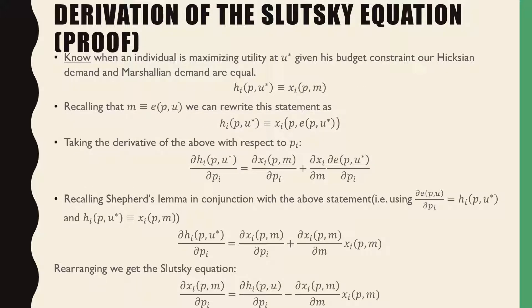To derive the Slutsky equation, know that when an individual is maximizing utility at U-star, which is our maximum utility given his budget constraint, our Hicksian demand and Marshallian demands are equal. Or written like this, the Hicksian demand for good I is equivalent to the Marshallian demand when utility is maximized at U-star.